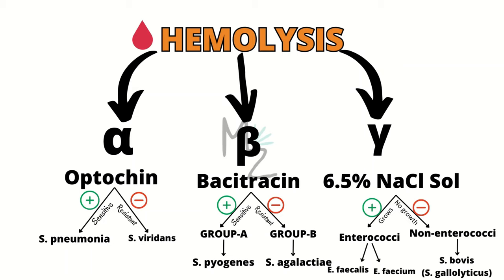And the gamma hemolytic bacteria, which are responsible for doing no hemolysis, are further classified based on their growth in 6.5% salt solution. If a bacterium grows in that solution, it is enterococcus and is further classified into enterococcus faecalis and enterococcus faecium.